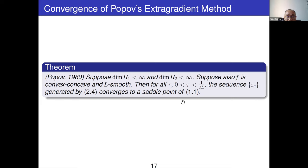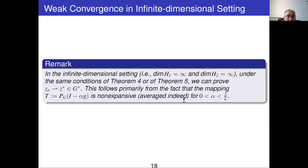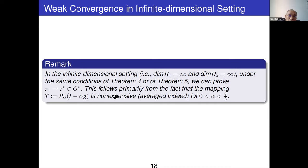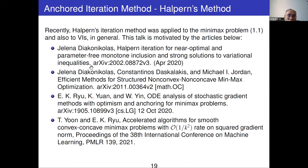In the infinite-dimensional setting, under Korpelevich's or Popov's conditions, we can prove that the sequence converges, but only in weak topology. This follows from the fact that the mapping is non-expansive when alpha is in (0, 2/L). Using this non-expansivity, we can prove in the infinite-dimensional case that z_n converges in weak topology. Those are the two traditional methods.